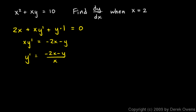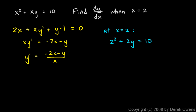We want to find y prime when x equals 2. We'll plug 2 in for x, but we also need to know y. So taking the original equation at x equals 2: 2 squared plus 2 times y equals 10. That's 4 plus 2y equals 10, so 2y equals 6, meaning y equals 3.